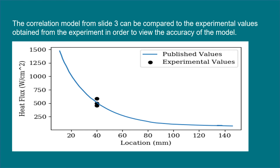We took the correlation from slide 3 and input our experimental values to compare them. The experimental values were in line with what the correlation was predicting, so we confirmed the thermopile was agreeing with the theoretical model from another company. We were expecting a heat flux of about 500 watts per centimeter squared, which ends up being approximately 5 million watts per meter squared.